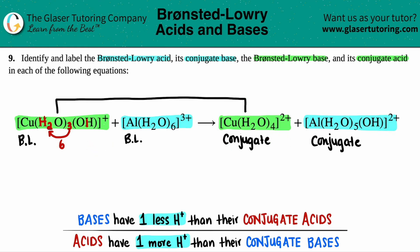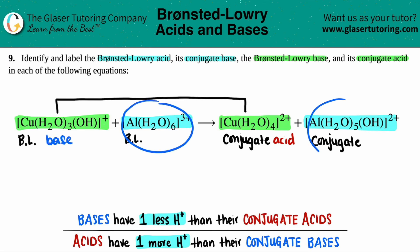Which one is the acid? It's this one — it's got one more hydrogen. Eight beats out seven. So since that's the case, this has to be the conjugate acid, and this has to be the base.